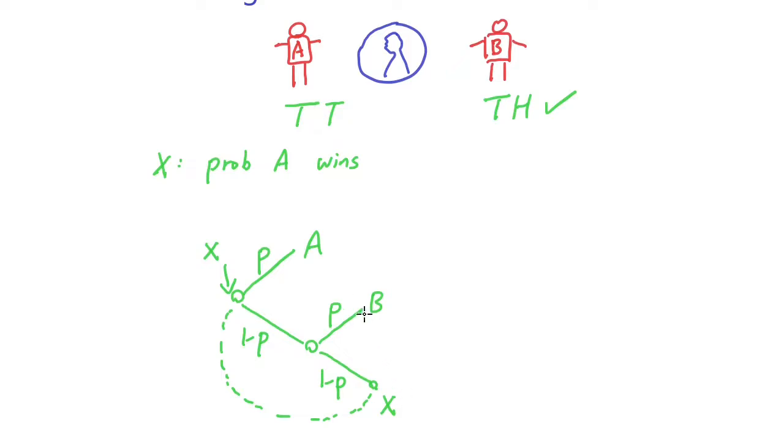And at this node, the probability that A would win is actually going to be 0 because at this point, player B has already won the game. And at here, we also know that player A won the game with P.